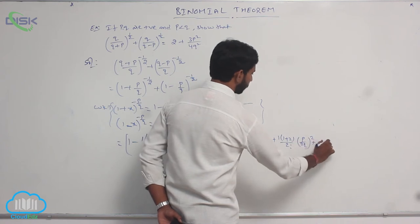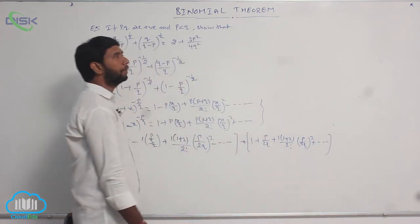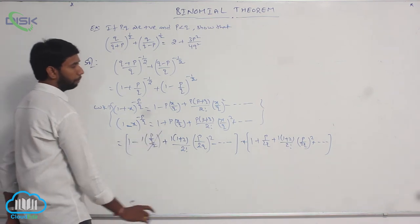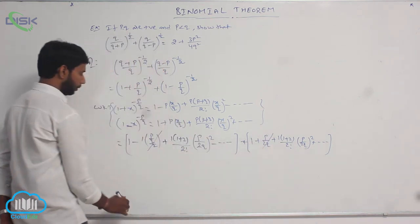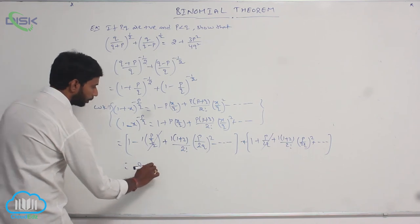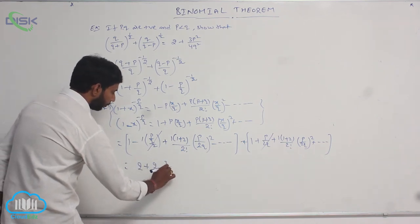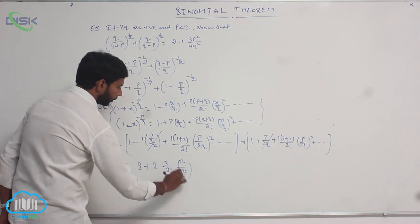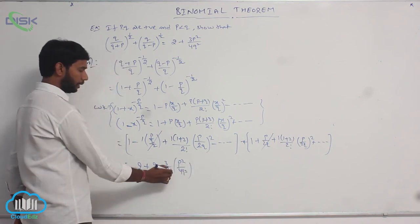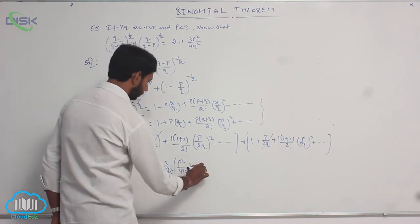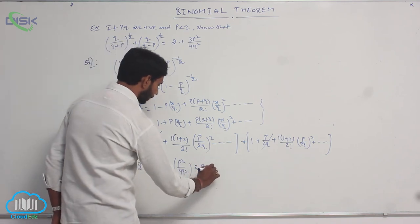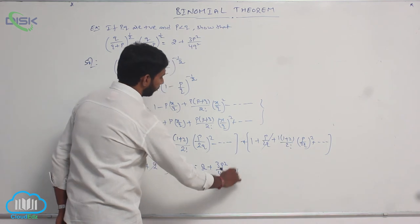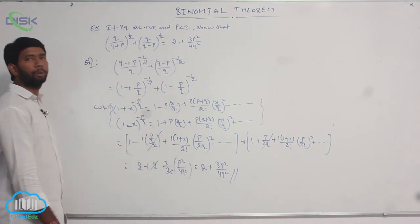Plus and so on. Adding the two expansions, the minus P/2Q and plus P/2Q terms cancel. We get 2 plus 2 times 3 over 2 factorial times P squared by 4Q squared, which simplifies to 2 plus 3P squared by 4Q squared. Hence proved.